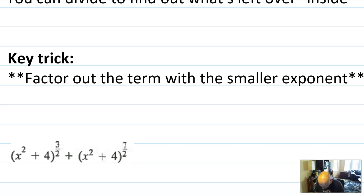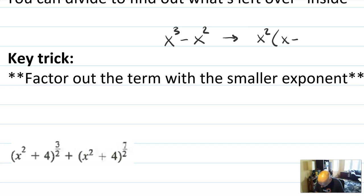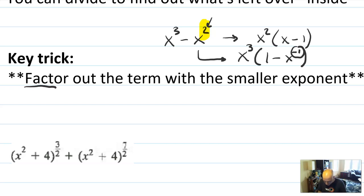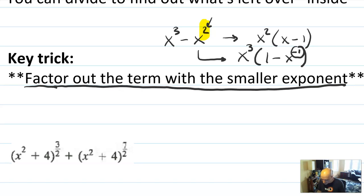And finally, here's the key trick: you want to factor out the term with the smaller exponent. Why? Let's say I had x cubed minus x squared. Obviously you'd factor out x squared and get x times the quantity x minus 1. That works because 2 was the smaller exponent. Could you factor out x cubed instead? Yes, but you'd get x cubed times 1 minus x to the minus 1 — that's awkward and we'd never do that, even though it's legal. So always factor out the term with the smaller exponent; that leaves you the nicest result inside.